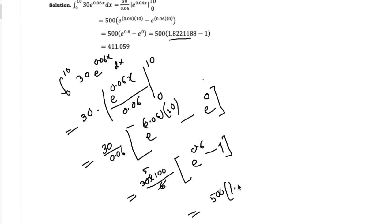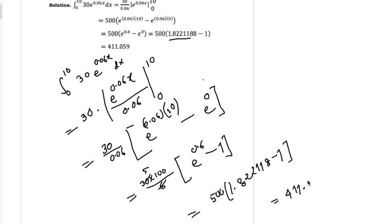The value of e to the power 0.6 is approximately 1.8221, so 500 times 1.8221 minus 1 gives a result of approximately 411.05.